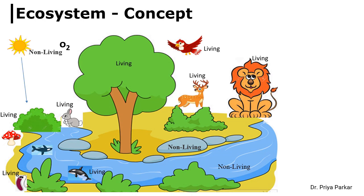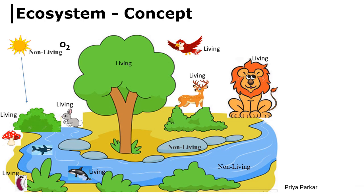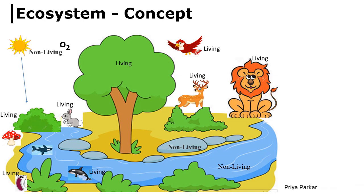This is a typical example of the forest ecosystem. In a forest ecosystem there are both living and non-living components. The trees, the birds, the lions, the deer, the fish and microorganisms are examples of living organisms. While the sunlight, the air, the water, the soil and the rocks are examples of the non-living environment.